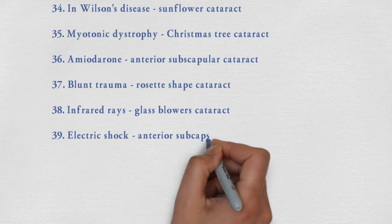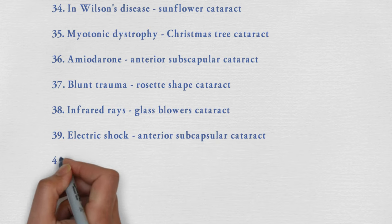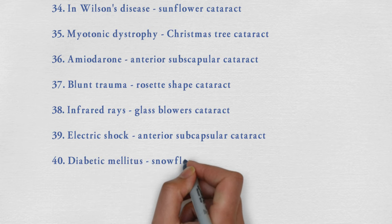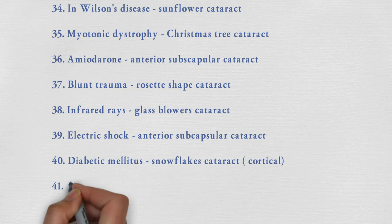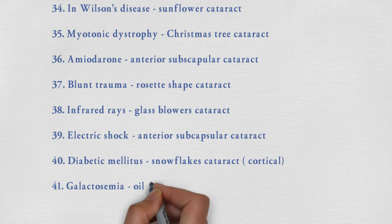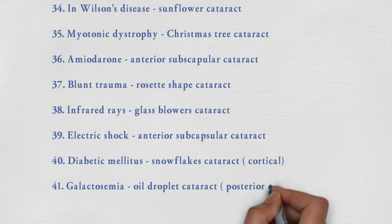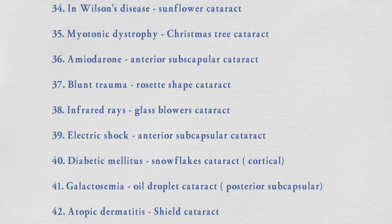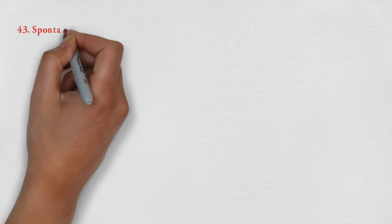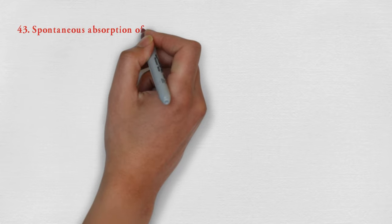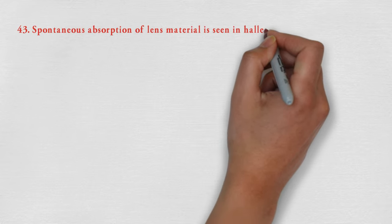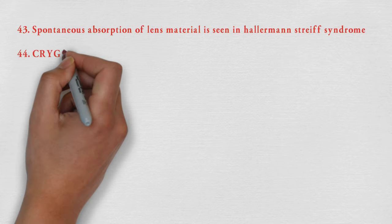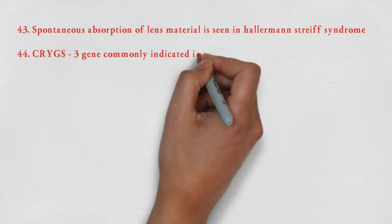Due to electric shock there may be anterior subcapsular cataract. In diabetes mellitus there is maximum chance of snowflake cataract, that is cortical cataract. In galactosemia there is oil-droplet cataract, also called posterior subcapsular cataract. In atopic dermatitis there may be shield cataract. Spontaneous absorption of lens material is seen in Hallermann-Streiff syndrome.